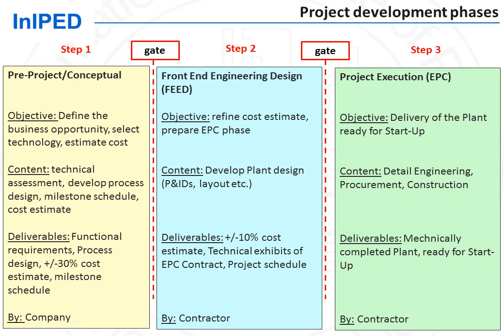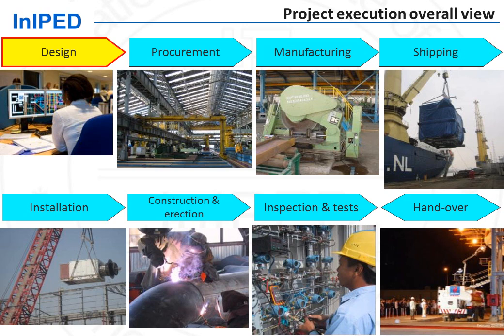This presentation, which is an introduction to plant design, will look at steps two and three. If we look at step three — what is called detailed design — compared to step two, which is called basic design, we see that design is only a small part of overall project execution. Project execution indeed not only involves design, but procurement, manufacturing, shipping, installation, construction, inspection and tests, and handover to the company. So here we are only looking at the first stage of the project, which is the design.